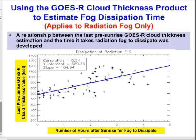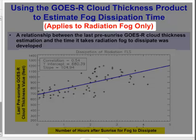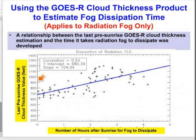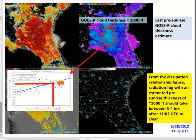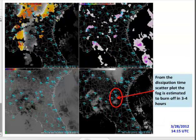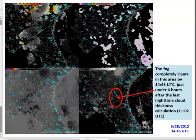There is a relationship between the last pre-sunrise GOES-R Cloud Thickness estimate and the time it takes radiation fog to dissipate. The last pre-sunrise GOES-R thickness is the y-axis on this plot, and the x-axis is the dissipation time. This method has only been tested on radiation fog events and can't be used in regions with multiple cloud layers where cloud thickness is not computed. Remember, cloud thickness is only computed for single-layer liquid water clouds. The greater the cloud thickness, the longer the dissipation time. This example over Florida shows the last pre-sunrise scene with a valid GOES-R cloud thickness at 11Z. The cloud thickness is about 1,000 feet, which corresponds to a dissipation time of about three to four hours. A little more than three hours later, the fog is almost burned off, and it's completely gone a half hour after that.